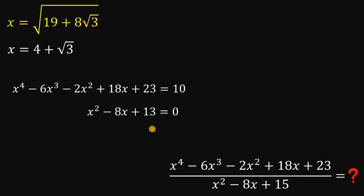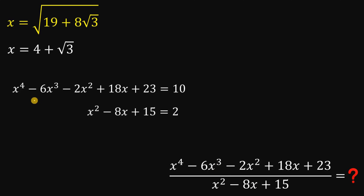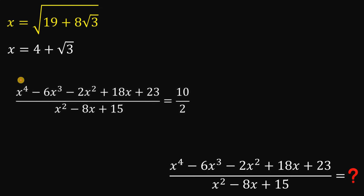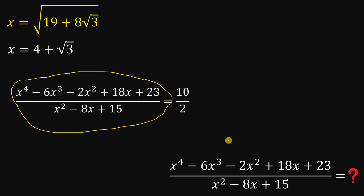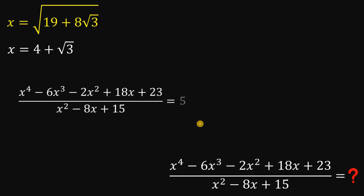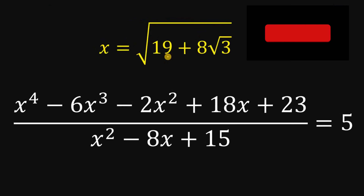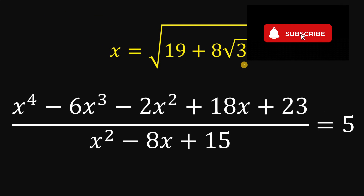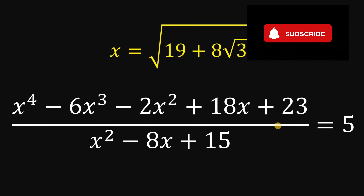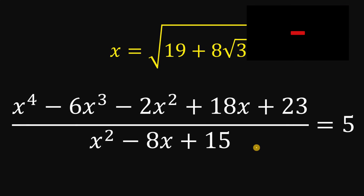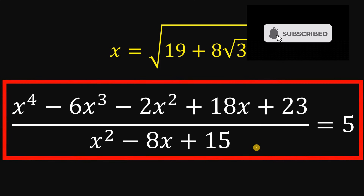For the denominator, adding 2 on both sides of x squared minus 8x plus 13 equals 0 gives x squared minus 8x plus 15 equals 2. So the full expression equals 10 over 2. Therefore, given x equals square root of 19 plus 8 times square root of 3, the value of x to the fourth power minus 6x cubed minus 2x squared plus 18x plus 23, all over x squared minus 8x plus 15, is simply equal to 5.